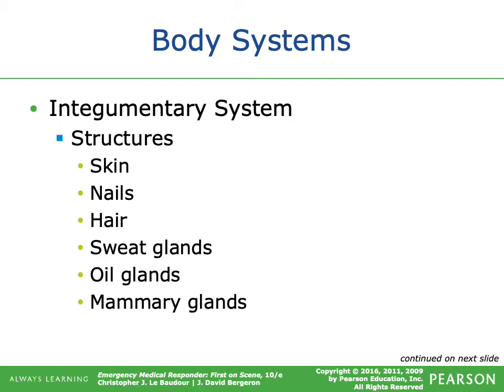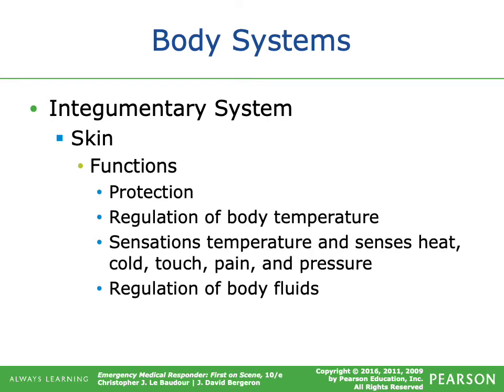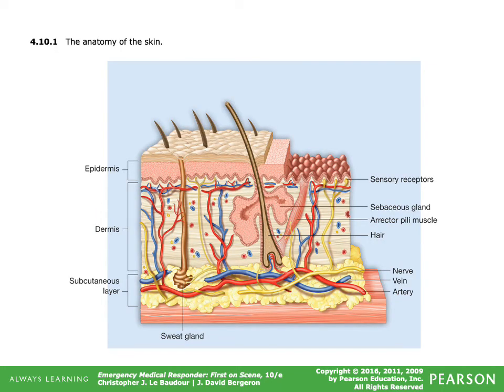The integumentary system is basically your skin and associated structures — skin, nails, hair, sweat glands, oil glands, and mammary glands. Skin is the largest organ of the body and is split into three layers: the epidermis (what you see), the dermis directly below that, and the subcutaneous layer underneath. Functions include protection, regulation of body temperature, sensation of temperature, heat, cold, touch, pain, and pressure, and regulation of body fluids.